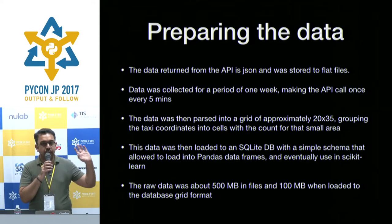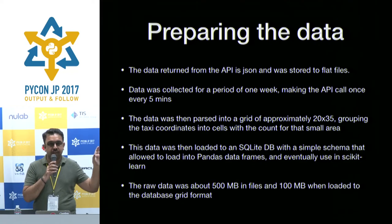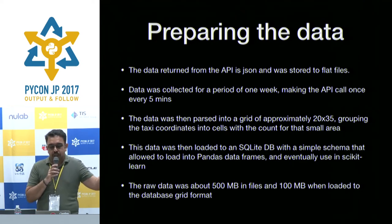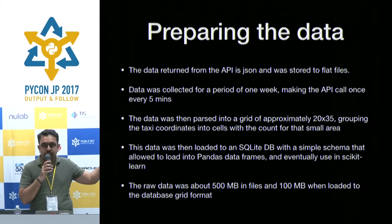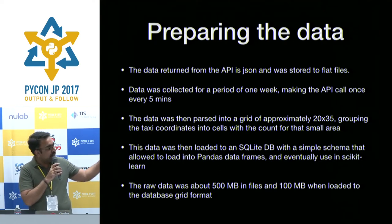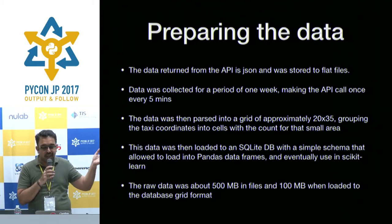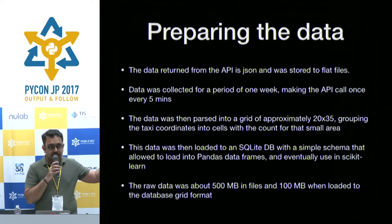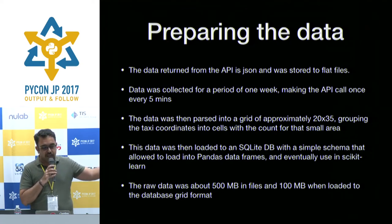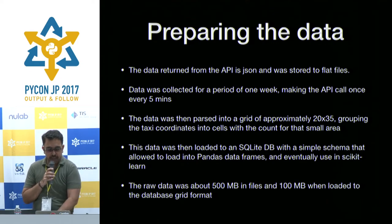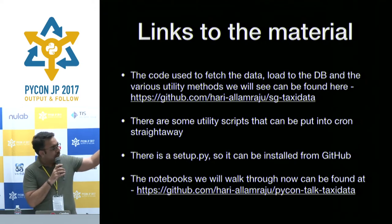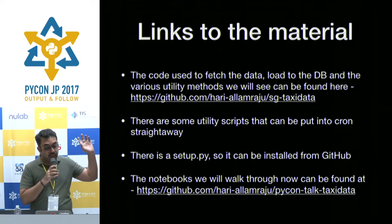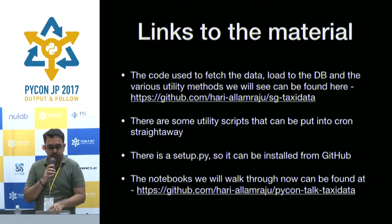For preparing the data — the API returns a list of all latitudes and longitudes, but not in a form we can directly use, so I had to do some preprocessing. I ran a script for about a week, collecting data every five minutes, then converted it into a grid and stored it in SQLite. The raw data in files was about 500 MB, which loaded into SQLite at about 100 MB. All of this is in the code on my GitHub repository, including a script you can put into a cron job and the Python notebooks we'll see now.